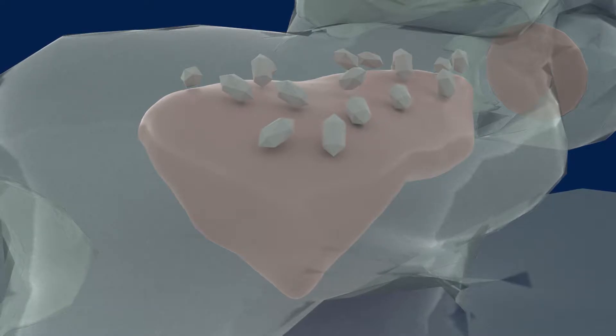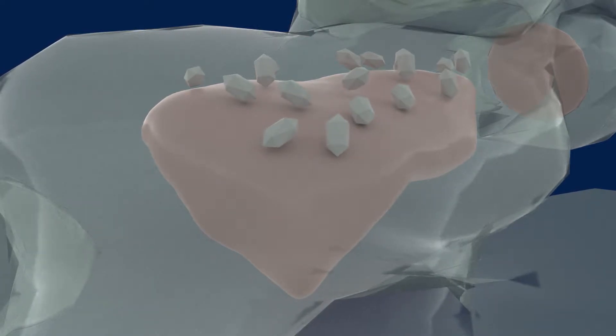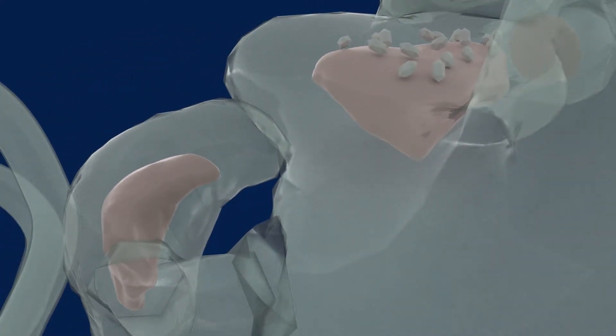And just like with the semicircular canals, we need more than one of these organs to sense movement in all directions. The horizontally aligned utricle is complemented by a similar but vertically aligned organ called the saccule. Together, these organs let us sense our head's orientation and linear accelerations.